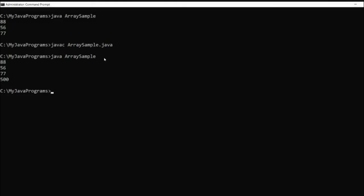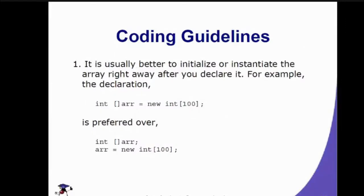It is usually better to initialize or instantiate the array right away after you declare it. For example, int r = new int[100] is preferred over declaring int r on one line and instantiating on the next, because sometimes you might forget to instantiate after declaring, which causes an error.